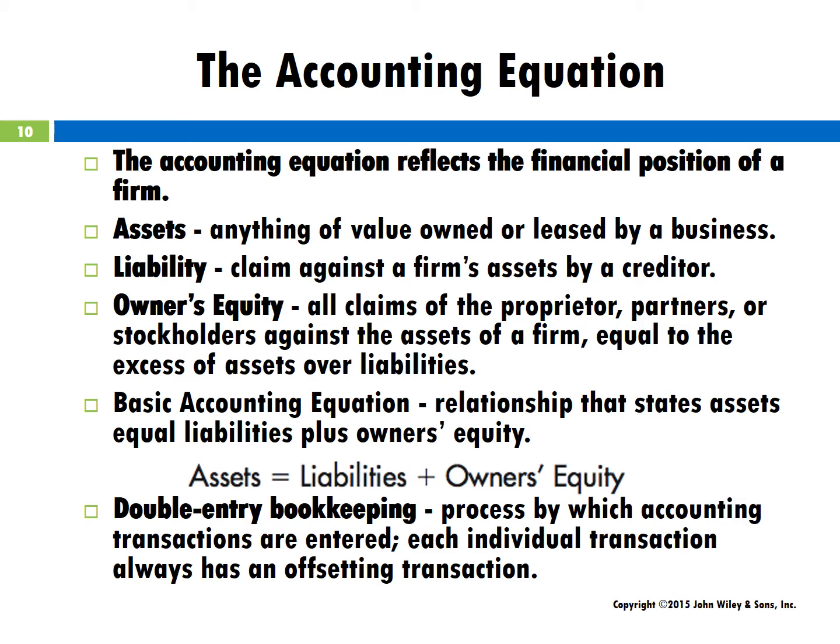The accounting equation also illustrates double-entry bookkeeping, the process by which accounting transactions are recorded. For each transaction recorded, assets must always equal liabilities plus equity, and each transaction must have an offsetting transaction.